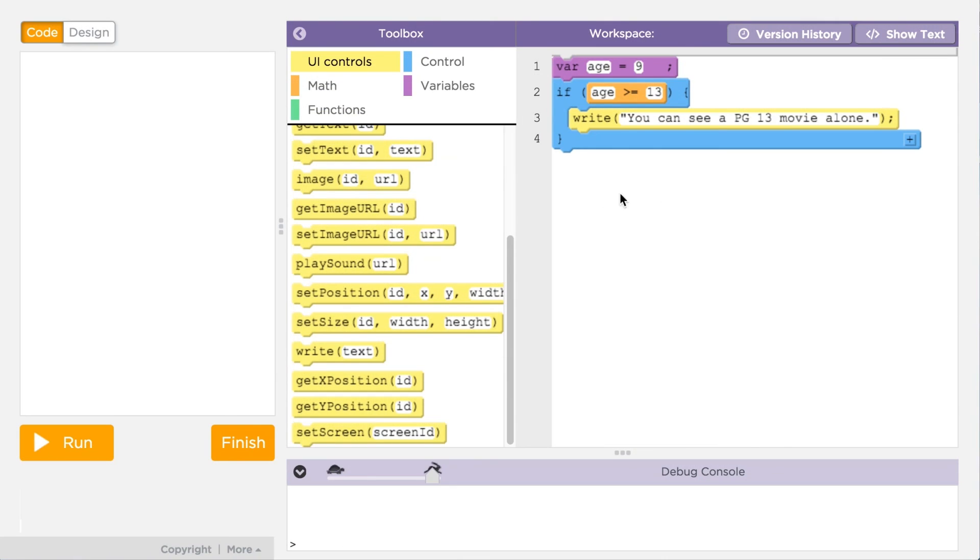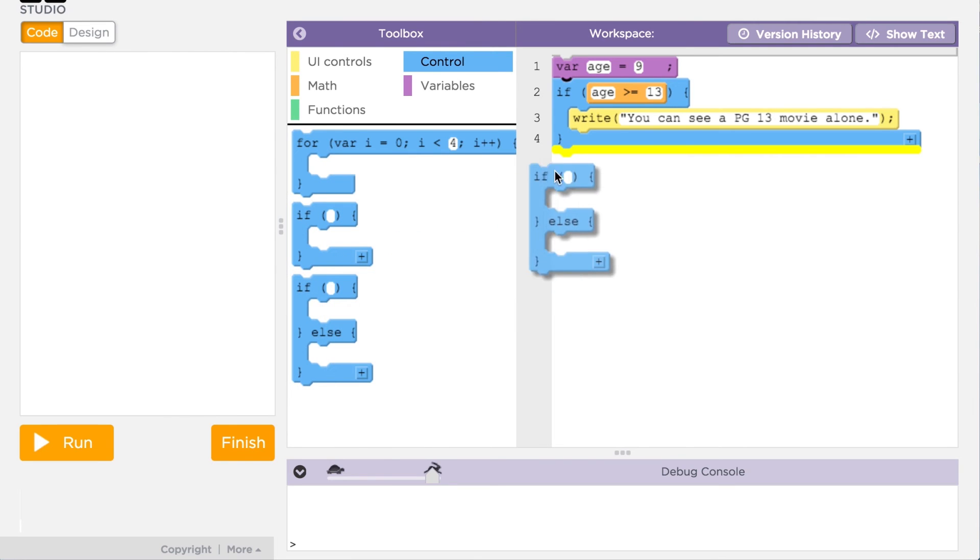In App Lab, you can add an else statement by either dragging out the if-else block or by clicking the plus symbol in the bottom right corner of the if block.